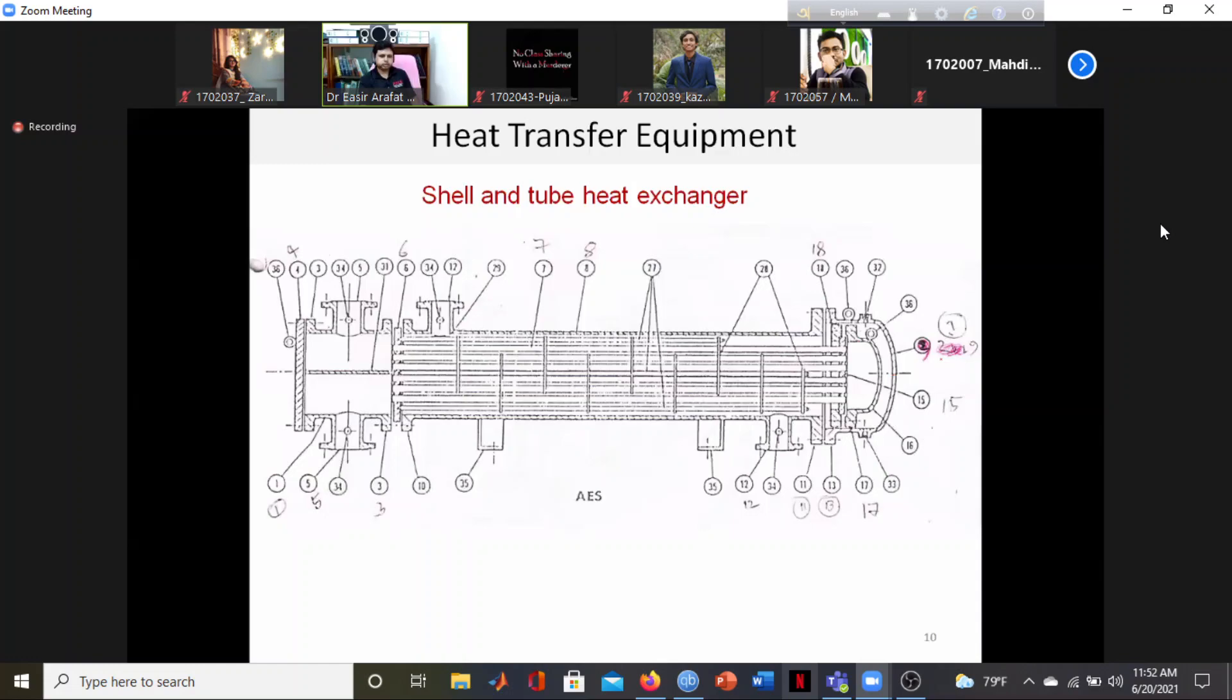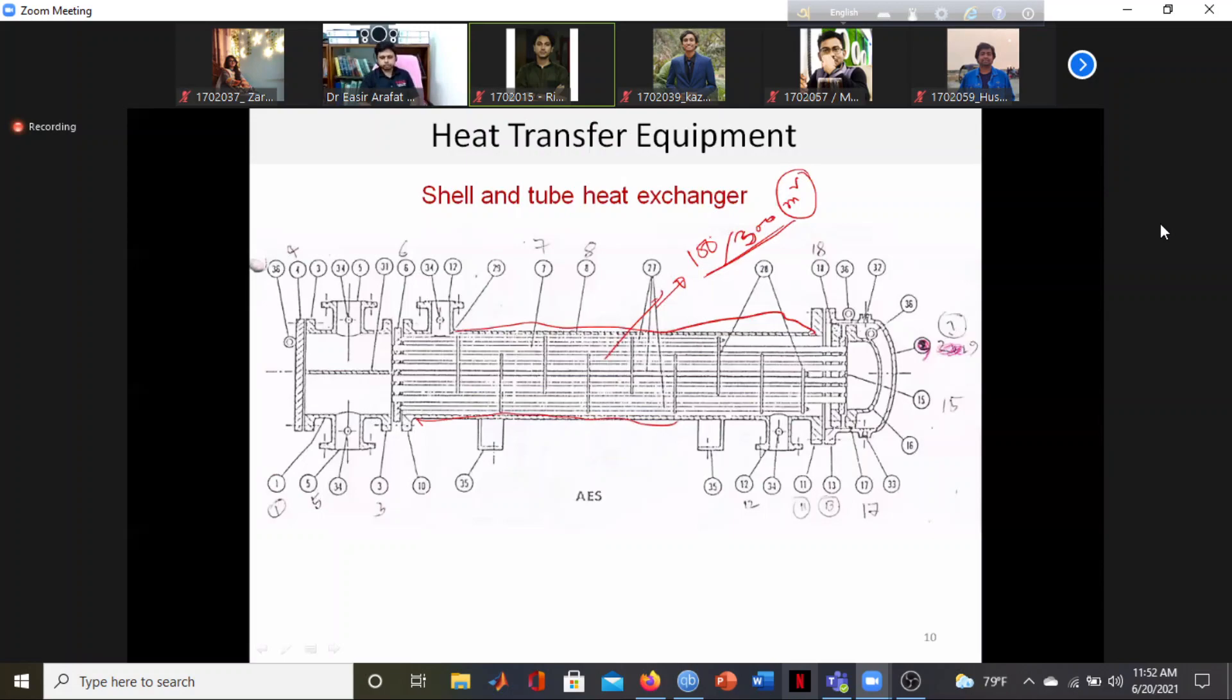Another type of heat exchanger is the shell and tube heat exchanger. It has a connector shell with a number of tubes inside, depending on the area required and the tube diameter. The tube length and diameter determine the surface area, with standard lengths like 16 or 24 meters.